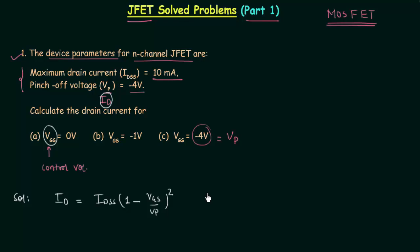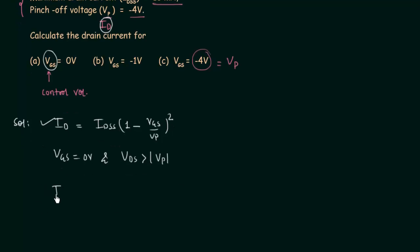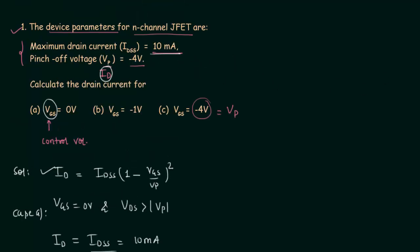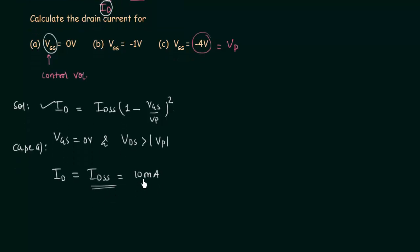We will first solve case A, where VGS is equal to 0V. We can use this formula to find out the drain current ID, but we will use the property of JFET. We already know when VGS is equal to 0V and VDS is greater than the magnitude of pinch-off voltage, the drain current ID is equal to IDSS, the maximum drain current. So for case A, the answer is equal to 10 mA, because IDSS is equal to 10 mA.